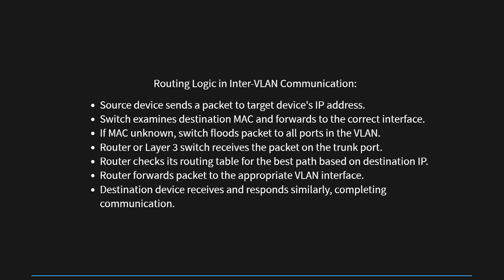When communication between devices in different VLANs is required, the process involves several steps to ensure successful data transmission. For instance, let's consider a scenario where a device in VLAN 10 needs to communicate with another device in VLAN 20. Here are the steps involved. Step 1: The source device — for example, PC1 in VLAN 10 — generates a packet destined for the IP address of the target device, for example PC2 in VLAN 20.